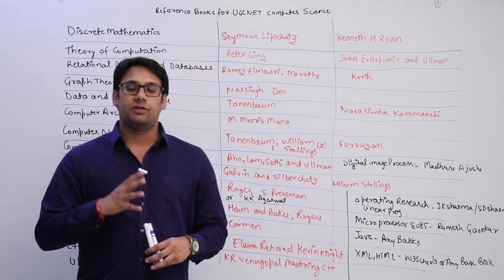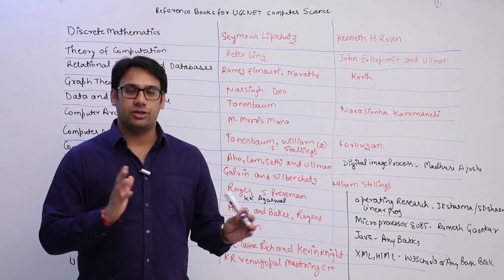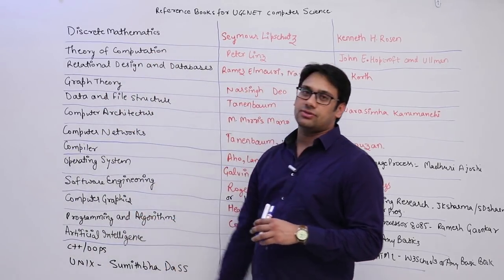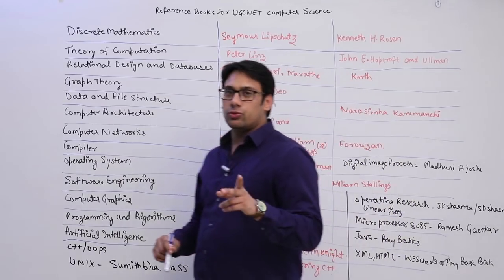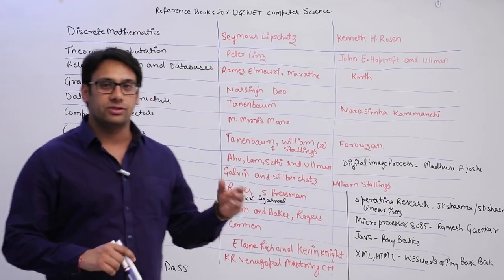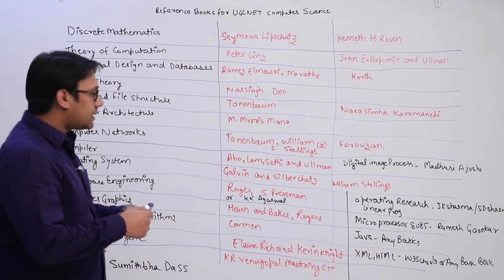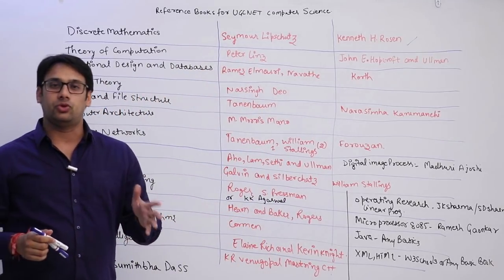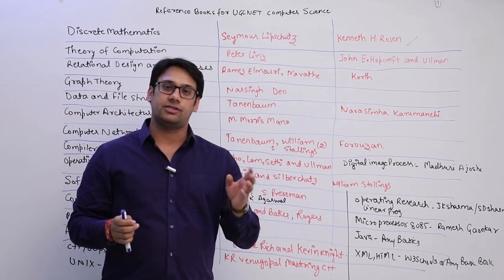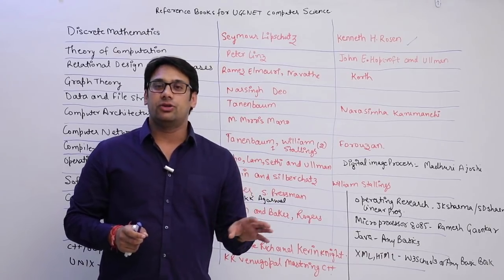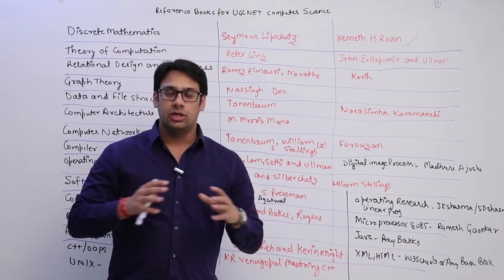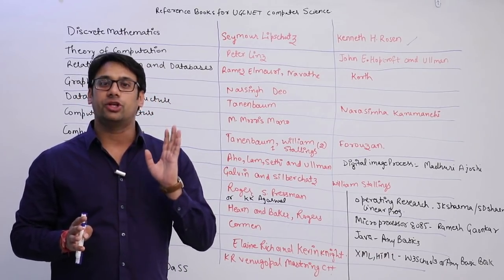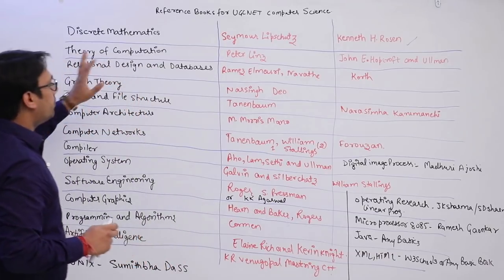Now, taking all subjects one by one: the first subject is Discrete Mathematics. You can refer two books — one is Shamshari, and the second is Kenneth H. Rosen. Personally I feel Kenneth H. Rosen is a better book. If you do all the practice questions in the exercise sections of Kenneth H. Rosen, you don't even need to refer any other book — there are a huge number of practice questions after every chapter.